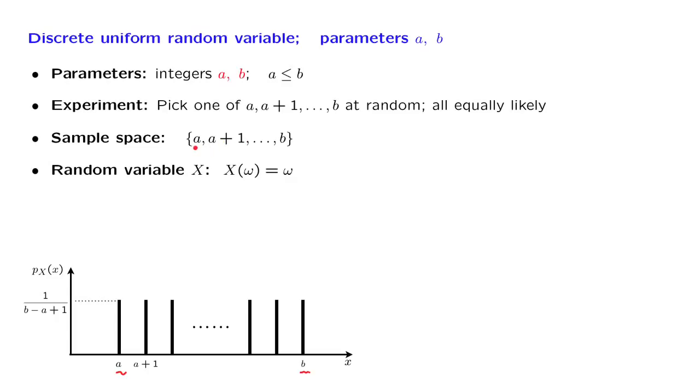To be more formal, our sample space is the set of integers from a until b. And the number of points that we have in our sample space is b minus a plus 1 possible values.